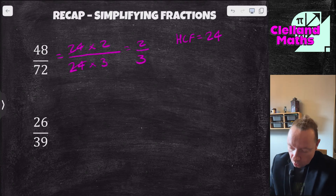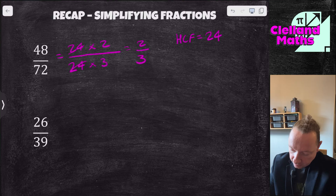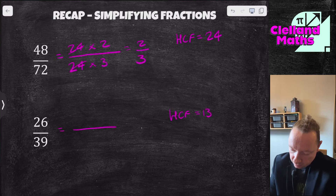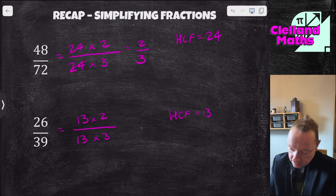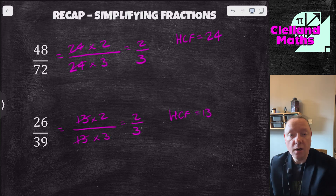Let's look at the bottom one. I've got 26 and 39, so the highest common factor is 13. I can think of this as 13 times 2 and 13 times 3, so that simplifies to 2 thirds because the 13s just cancel each other out.